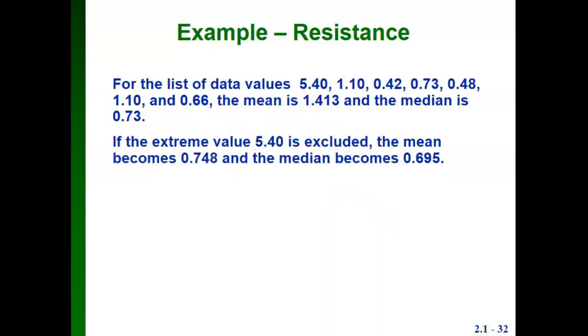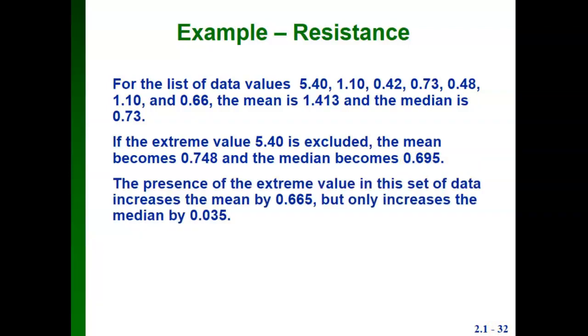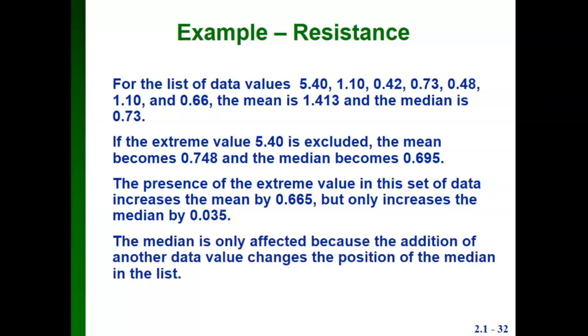Notice that list has an extreme value in it. The 5.4 is much larger than any of the other values in the list, so we would call that an extreme value. If we exclude that value and recalculate, the mean changes to 0.748 and the median changes to 0.695. The 5.4 value increases the mean by 0.665, but only increases the median by 0.035. It changes the mean a lot more than the median. The median is only affected because the addition of another data value changes its position in the list.